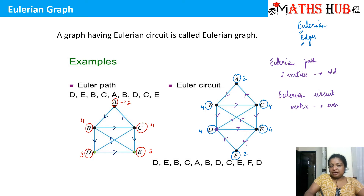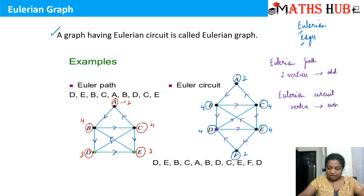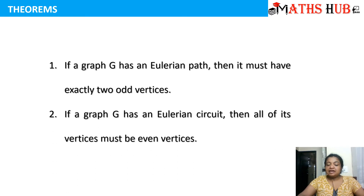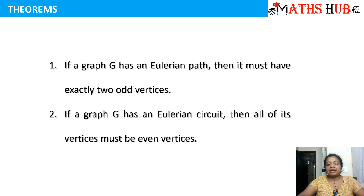Any graph which has an Eulerian circuit is called an Eulerian graph. The two important results: first, if a graph G has an Eulerian path, then it must have exactly two odd vertices. Second, if a graph G has an Eulerian circuit, then all of its vertices must be even. These two results will help you determine whether an Eulerian path or circuit exists in any graph.